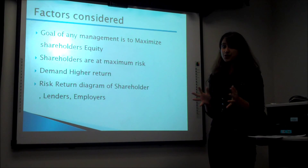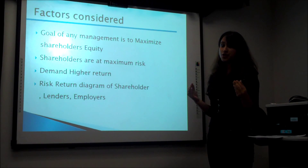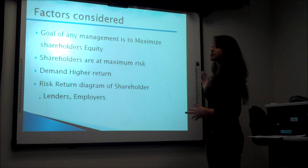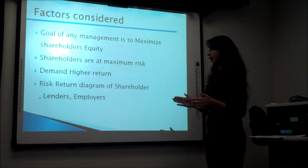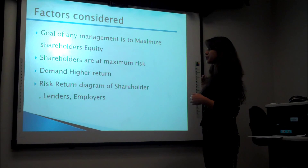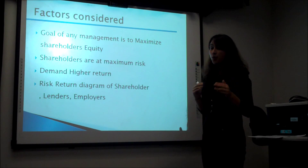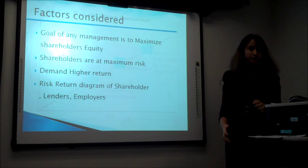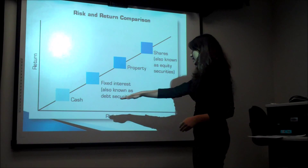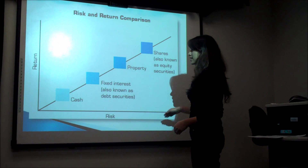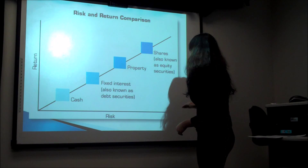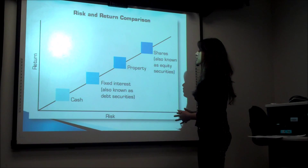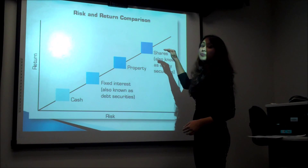What is the goal of management and what are the factors to be considered to analyze any ratio? First, the goal of any management is to maximize the shareholders' equity. Shareholders are at a maximum risk, so more risk demands for more return. Here in the diagram, our x-axis shows the risk and y-axis shows the return. We can see that the shareholders are at higher risk, so they demand for a higher return.